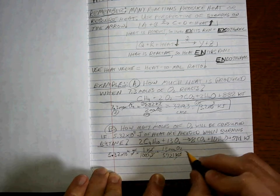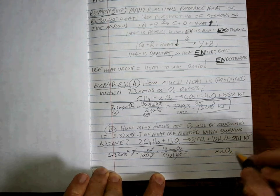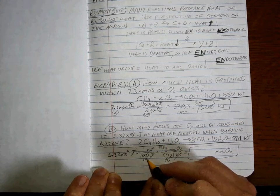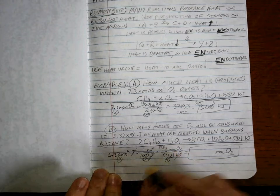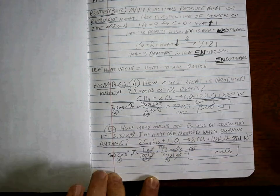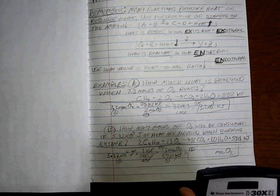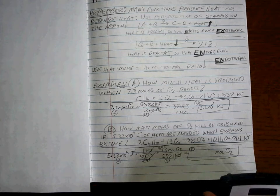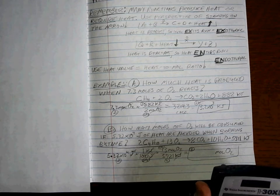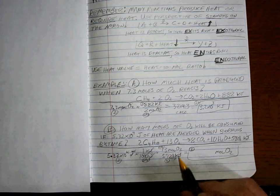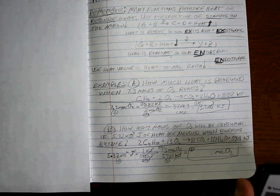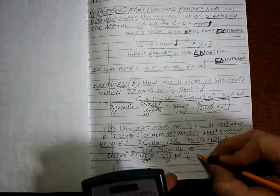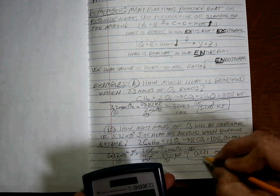Kilojoules cancel. Everything cancels except the moles of O2. This is an infinite value, this is 4, this is infinite, and this is 3. So we're talking 3 sig figs in our answer. Plug and chug: 5.32 times 10 to the 4th divided by 1,000 times 13, the heat-to-mole ratio, divided by 5721, and I get 0.121 moles.